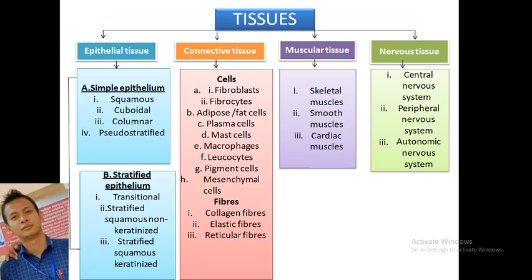Epithelium tissues are divided into two types: simple epithelium and stratified epithelium. In simple epithelium, they are divided into squamous cells, cuboidal cells, columnar cells, and pseudostratified. Stratified epithelium is divided into transitional and stratified squamous — both non-keratinized and keratinized.